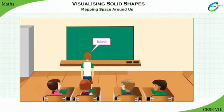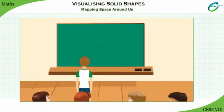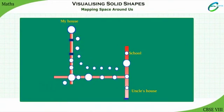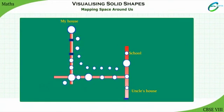Rakesh is Rahul's younger brother. He is drawing a map on the board to explain to his friend where he stays. Usually, maps are used to locate a particular place, river, mountain, etc. This map is drawn by Rakesh. In this map, the route from his house to his uncle's house is shown.